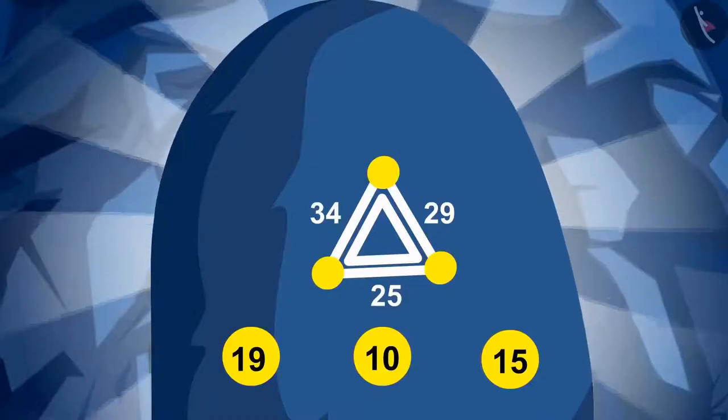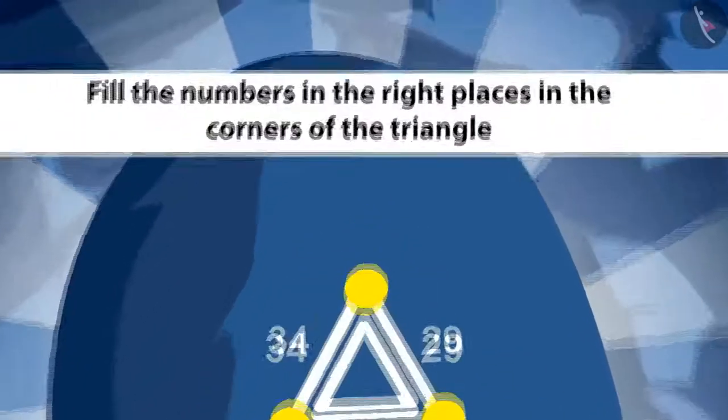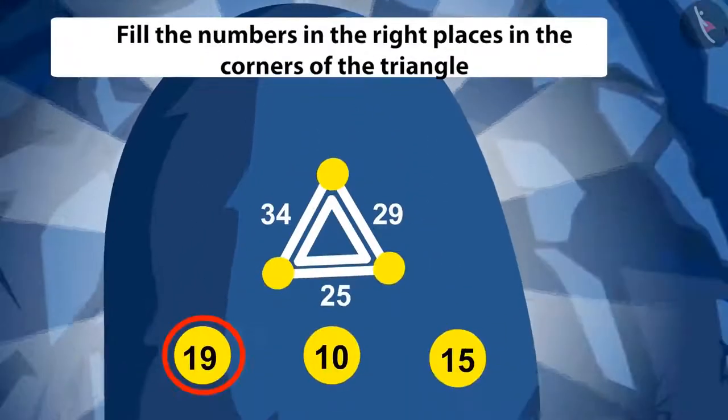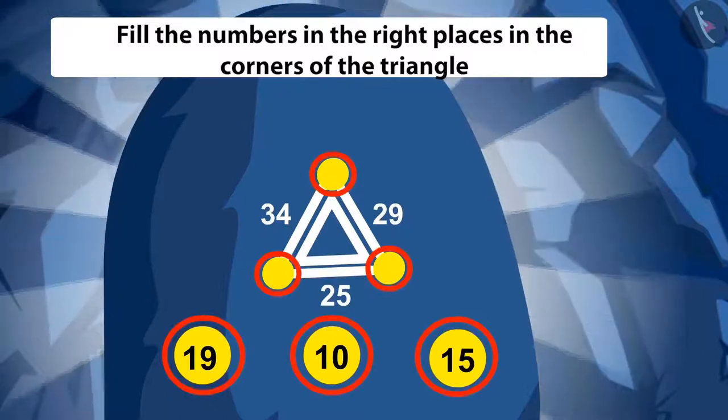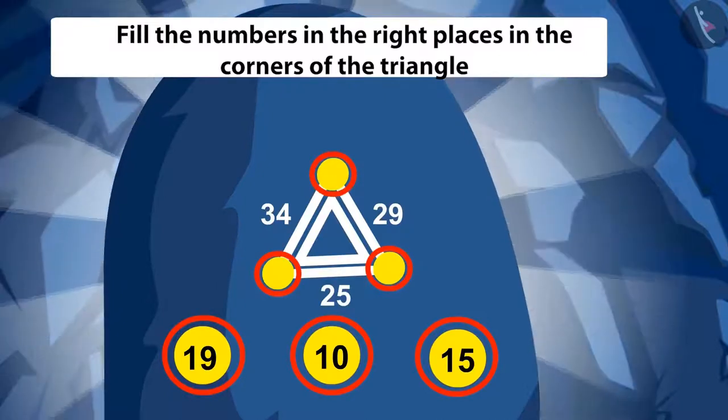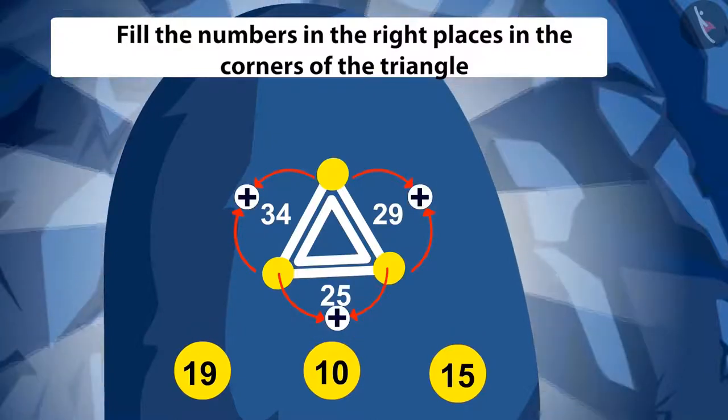Suddenly, Tufan can see this question above that mark. Fill the numbers in the right places in the corners of the triangle in such a way that the addition of the numbers in each of the two corners is equal to the number written in between them.